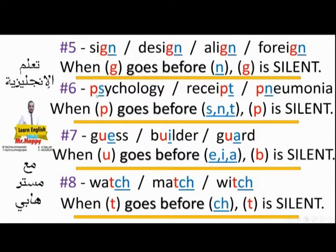Psychology — don't say 'psy-chology', say 'psychology'. Receipt — don't say 'receipt' with the P. Pneumonia — don't say 'pneumonia', it's 'pneumonia'. P is silent because it goes before S, N, or T. Rule number seven: guess, builder, guard — when U goes before E, I, or A, U is silent.